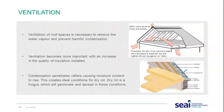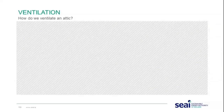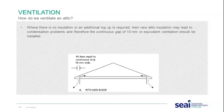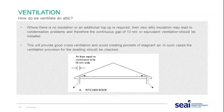Ventilation in the roof space is necessary to remove water vapour and prevent harmful condensation. Ventilation becomes more important with the increased quality of insulation used. Condensation penetrates rafters causing moisture content to rise, creating ideal conditions for dry rot — a fungus which can germinate and spread in these conditions. Where there is no existing insulation or a top-up is required, new attic insulation may lead to condensation, and therefore a continuous gap of 10 millimetres or equivalent ventilation should be installed.